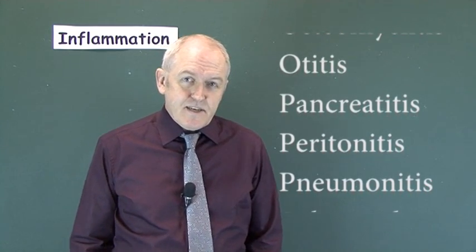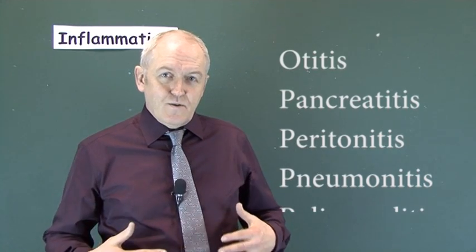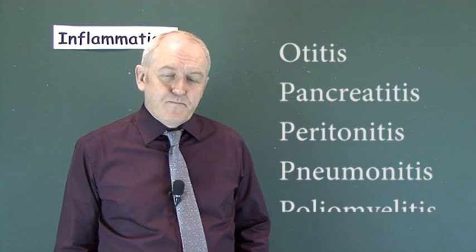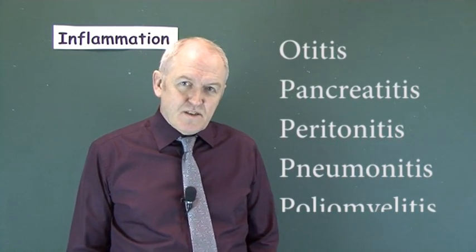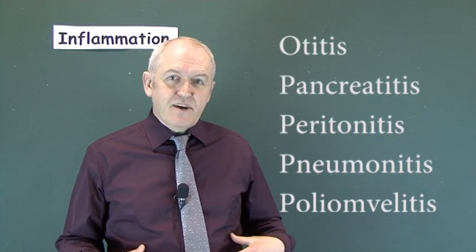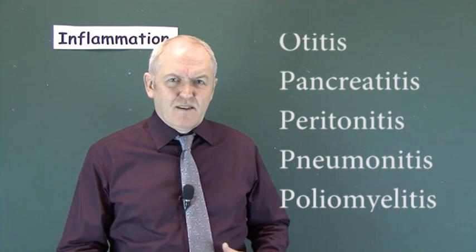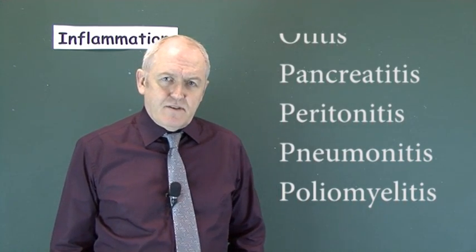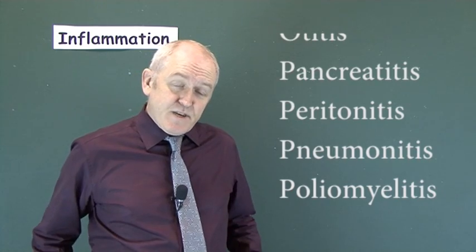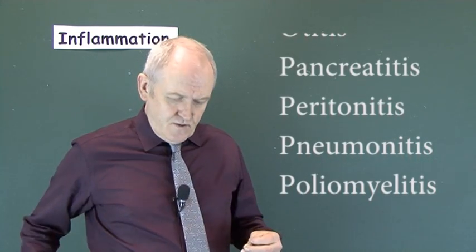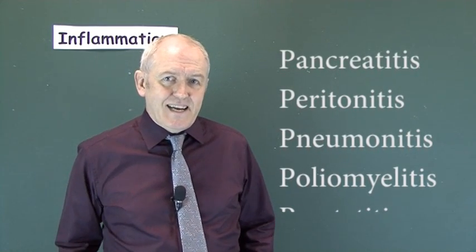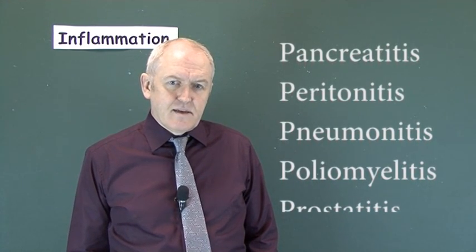Peritonitis is inflammation of the peritoneal membranes forming the peritoneal sac in the abdominal cavity. It can be caused by perforation, penetrating injury, or release of blood or bile — anything causing chemical inflammation in the peritoneal cavity. If caused by perforation with gastrointestinal contents leaking in, that is a surgical emergency and an immediate life-threatening condition.